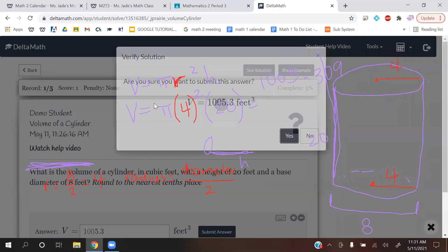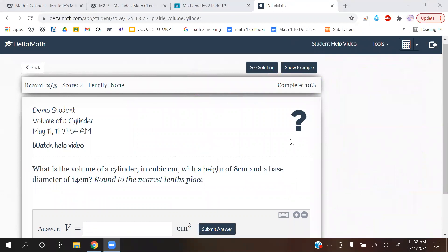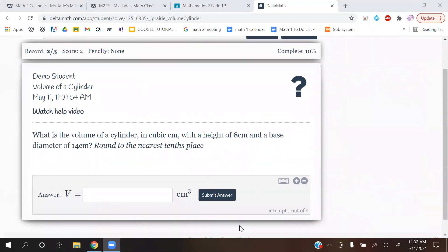I'll do a couple more examples for this one. Let me clear my screen. Okay, what is the volume of the cylinder in cubic centimeters with a height of 8 centimeters and a base diameter of 14 centimeters? Okay, so we got another diameter, so let me.